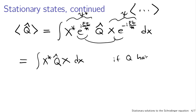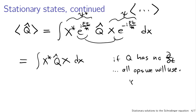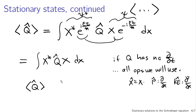Position x̂ is just multiplication by x; momentum involves differentiation with respect to x; and kinetic energy involves second derivatives with respect to position. There are no time derivatives in any of the physical operators we'll be talking about. What that means is that the time dependence drops out, and the expectation value of Q̂ — and Q̂ can be anything — again has no time dependence. So our expectation values are constant if our physical system is described by a wave function that separates like this.